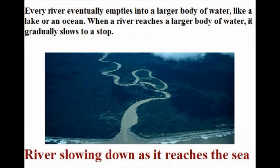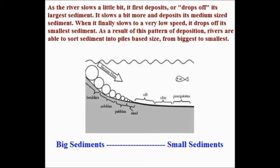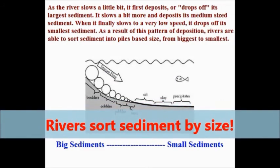Every river eventually empties into a larger body of water, like a lake or an ocean. When a river reaches a larger body of water, it gradually slows to a stop. As the river slows a little bit, it first deposits or drops off its largest sediment. It slows a bit more and deposits its medium-sized sediment. And when it finally slows to a very low speed, it drops off its smallest sediment. As a result of this pattern of deposition, rivers are able to sort sediment into piles based on their size, from biggest to smallest.